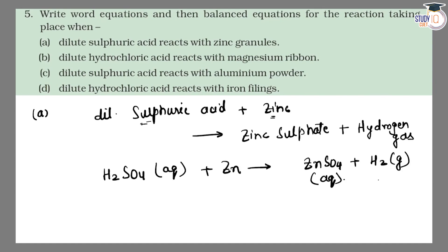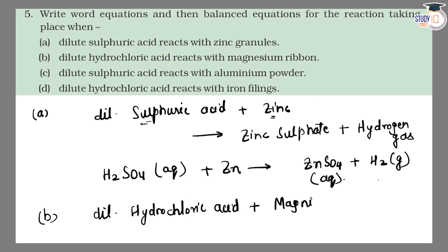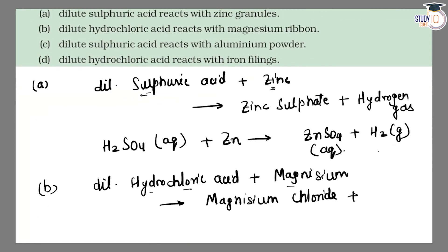Now Part B: dilute hydrochloric acid reacts with magnesium ribbon. Again this is a metal-acid reaction. The acid releases hydrogen, so magnesium replaces hydrogen. Products are magnesium chloride and hydrogen gas released from hydrochloric acid.